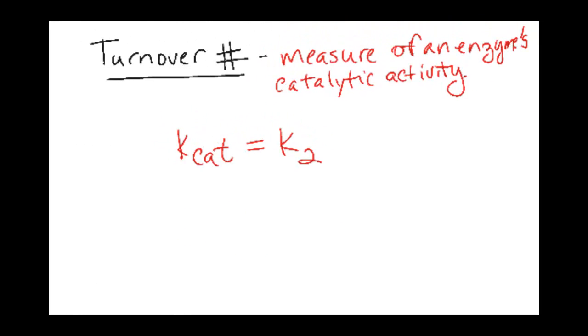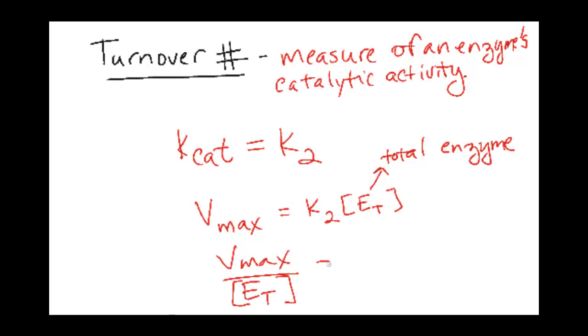So if you remember the equation, Vmax equals k2 times the total enzyme concentration. Then we can solve for k2 or k-cat and get Vmax over enzyme total concentration. So basically this represents the kinetic efficiency of the enzyme. How quickly does it turn over?